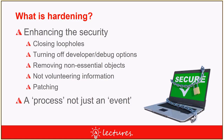A default install of Tomcat includes things like the management console, example apps, and documentation — items that don't need to be published in a production application, so we remove those. It's also good practice to patch things. The key thing here is that hardening is not an event; it's not a one-time thing you do when you deploy your solution. It's a process — an ongoing activity where you have to monitor changes in security, available ciphers, and encryption routines.